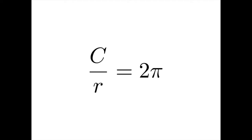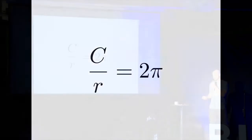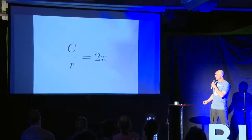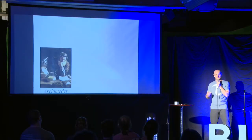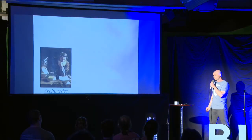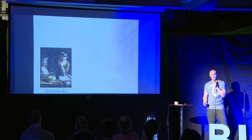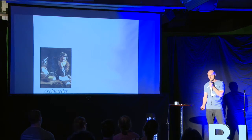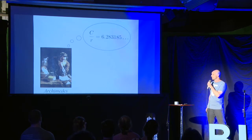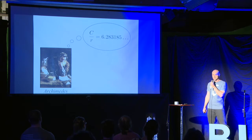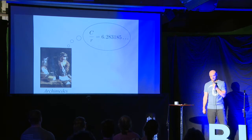If you multiply through by that factor of two, you can see that c over r is just two pi numerically. And if you look back at the original approximation by Archimedes, in fact he calculated both c over d and c over r. In modern decimal notation, it appears as 6.283185 and so on.